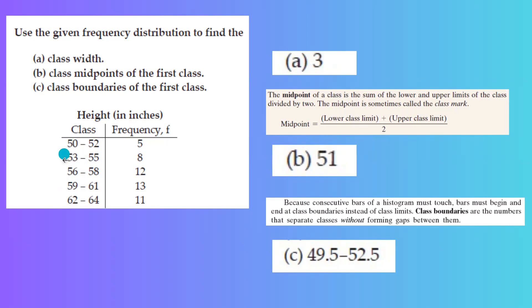So the class width, the difference between the first lower bounds of consecutive classes, is 3. You can also work with the lower bounds of each class.